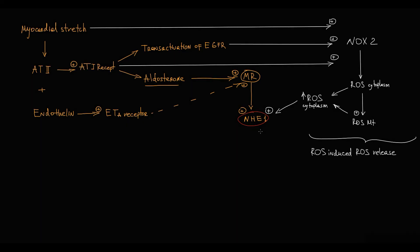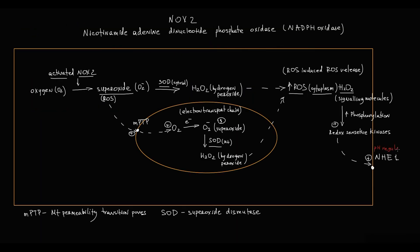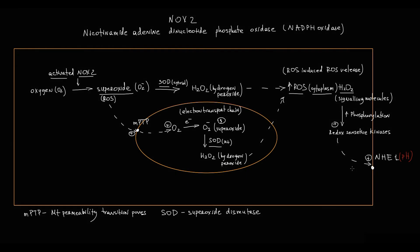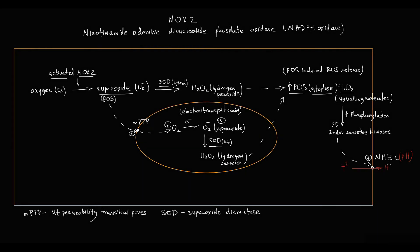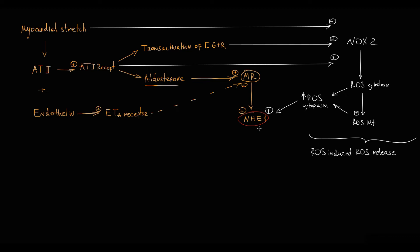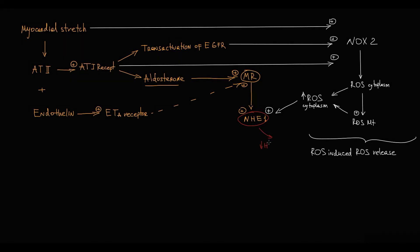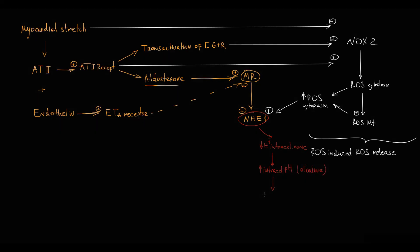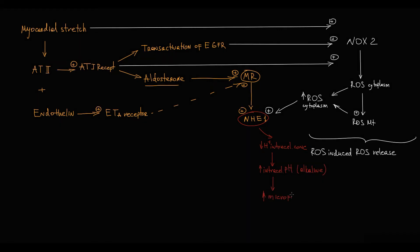The main function of the sodium-hydrogen exchanger is regulation of pH inside the cell. It regulates pH by exchanging intracellular hydrogen ions for extracellular sodium ions. With very strong stimulation of the sodium-hydrogen exchanger, more hydrogen ions leave the cell, so the intracellular environment becomes more alkaline. An alkaline environment increases myofilament calcium sensitivity. This results in an increasing force of contraction.